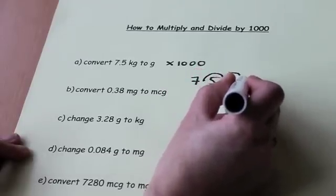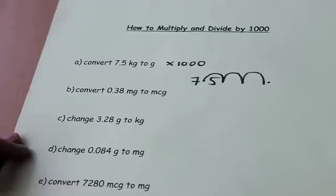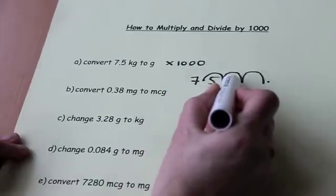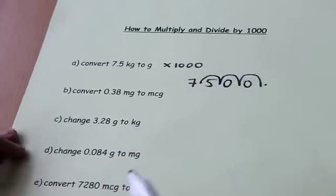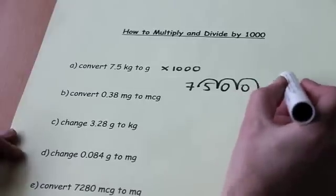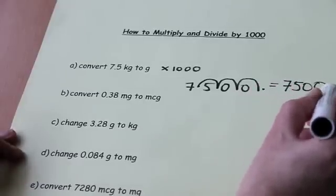One, two, three. So the decimal point has now moved to the end. These empty spaces must be filled up with zeros. And to tidy up, our final answer will be 7,500 grams.